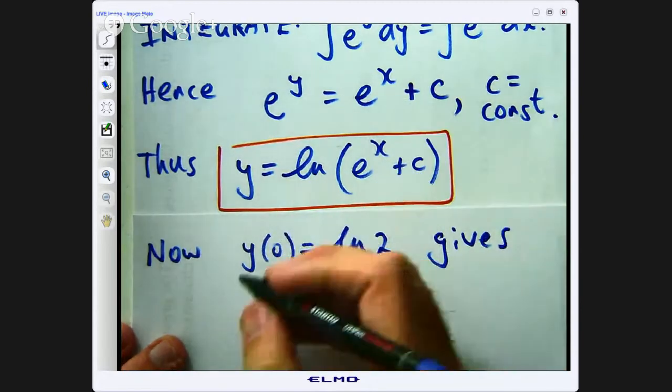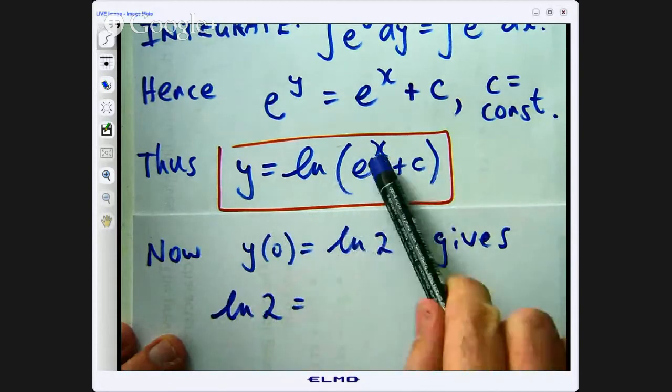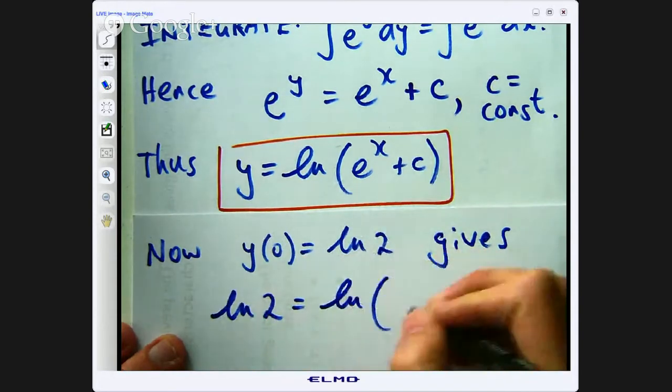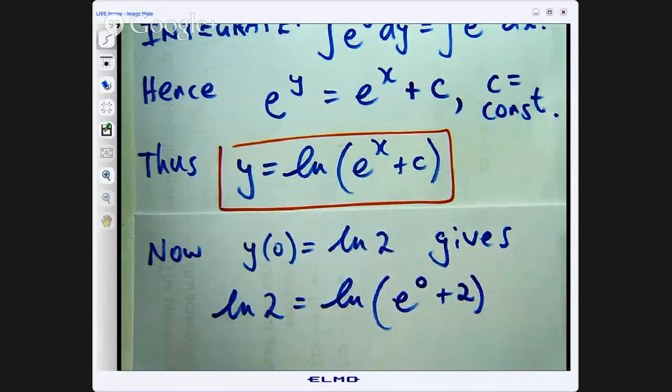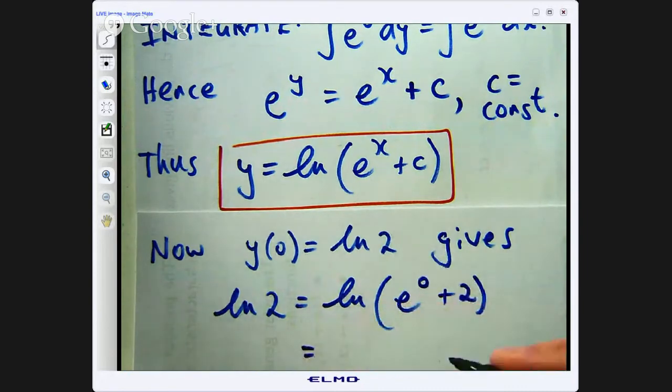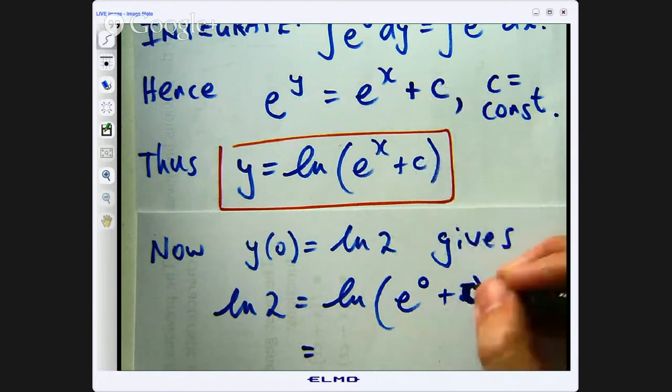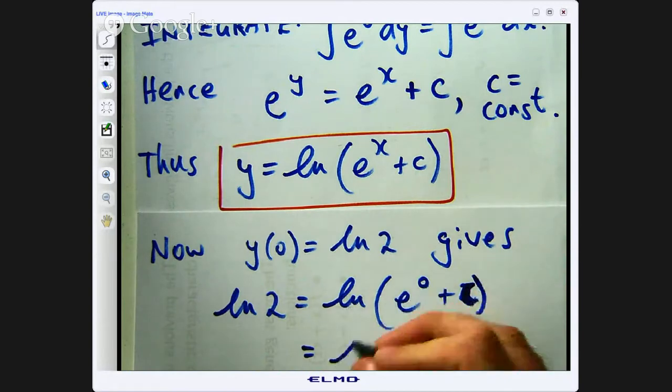So we make the left hand side log 2 and we replace x with 0 in here. So e to the 0 is 1, so I will get log, oh sorry, that should be a c there, a c there. So the c comes down from there. Oops, sorry about that. Let me fix that up. So e to the 0 is 1, so I am going to get log 1 plus c.